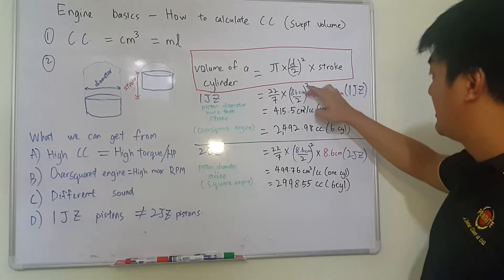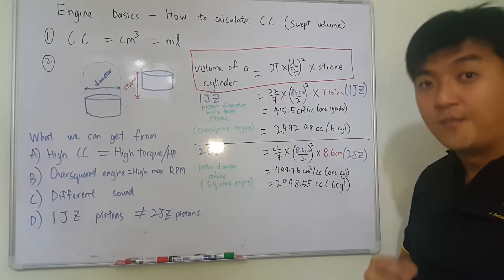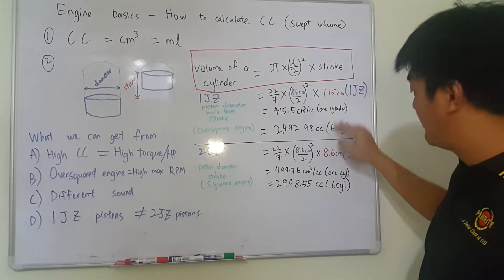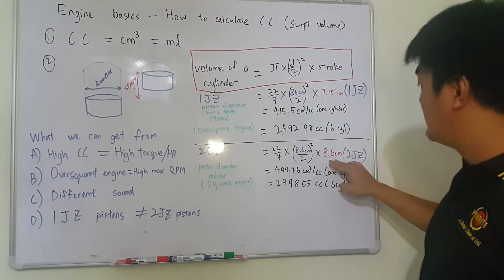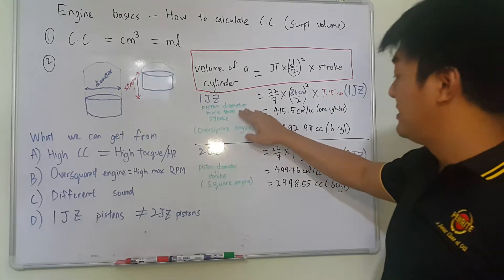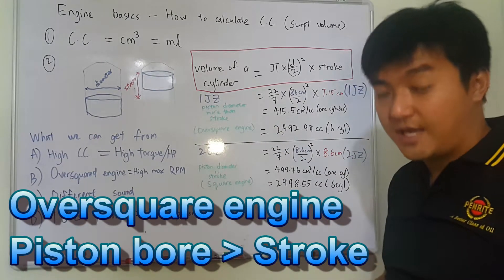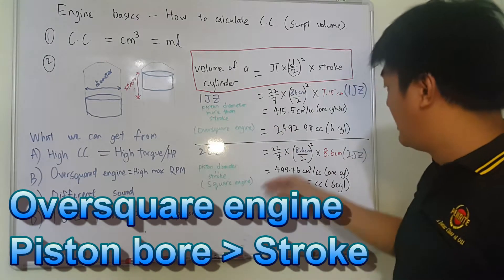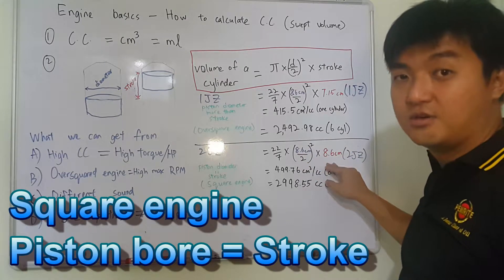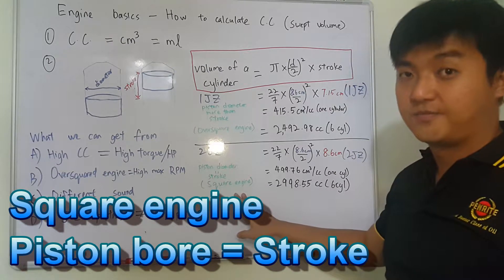Okay, we can also notice something, the piston is the same diameter, but the stroke for 1JZ is 7.15, but the stroke for 2JZ is the same as the piston diameter. So what does it mean is, the piston diameter more than the stroke, we call it as an over square engine. Okay, for these two, the piston diameter and the stroke is the same, so we call it as a square engine.